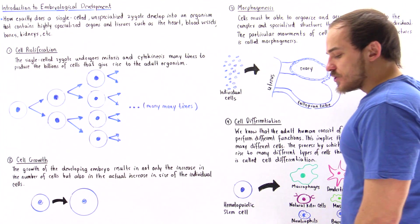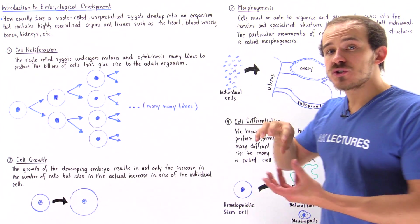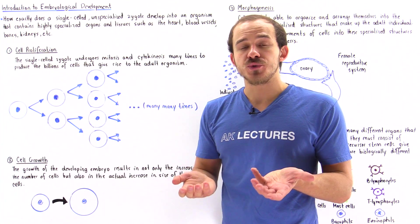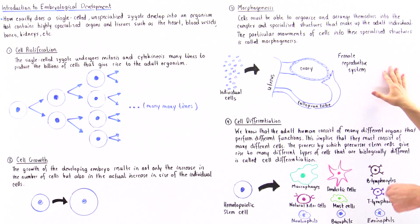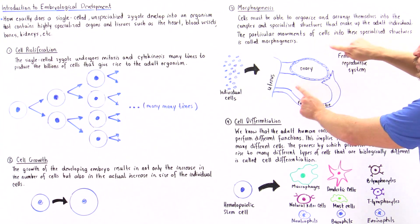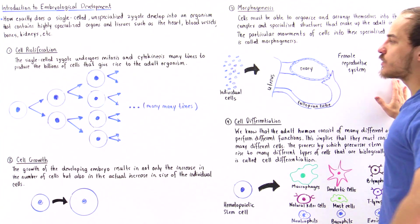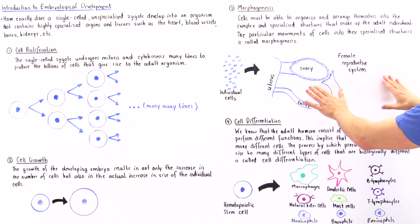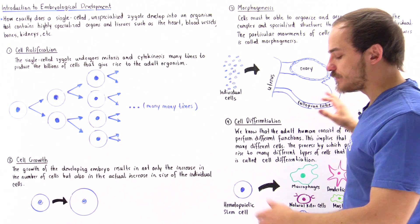What about morphogenesis? Morphogenesis is the process by which individual cells aggregate and organize themselves in a special manner by moving around to produce the many tissues, organs, and systems of our body. For example, if we look at the female reproductive system, we have different organs such as the ovary, the fallopian tube, the uterus, and other organs. The process by which a heap of cells organizes itself into these structures is known as morphogenesis.